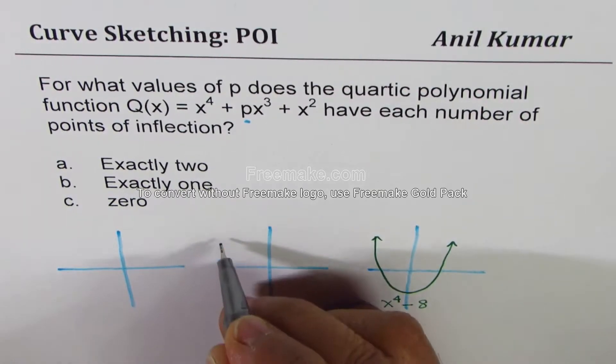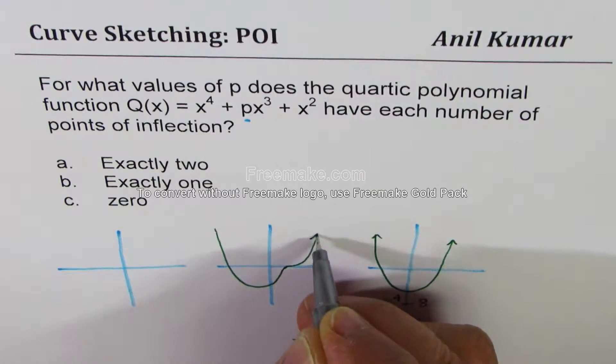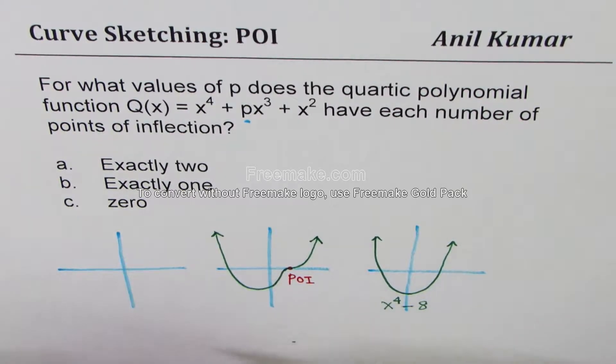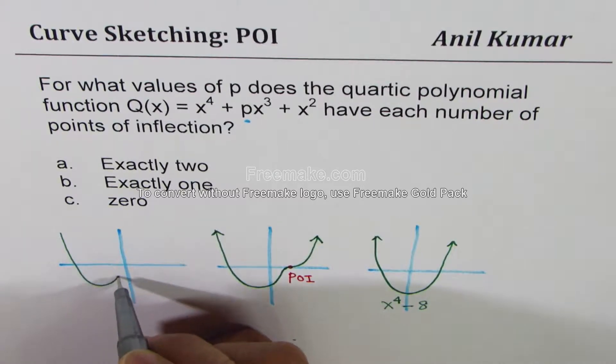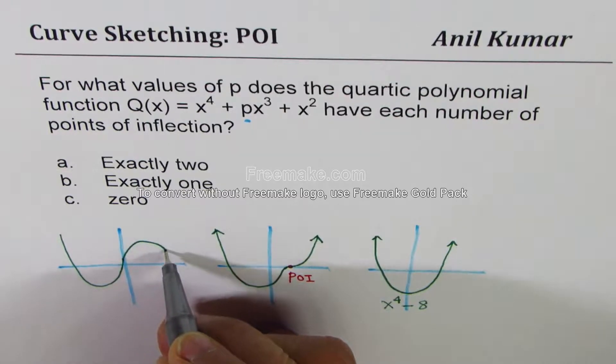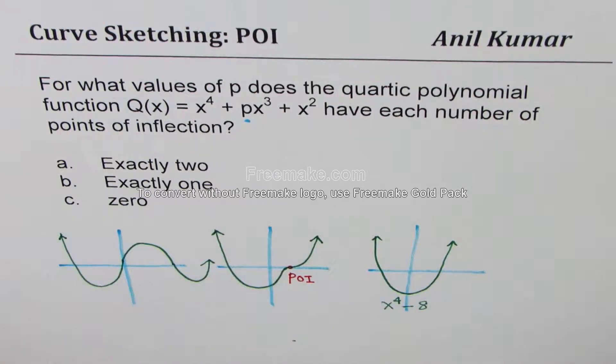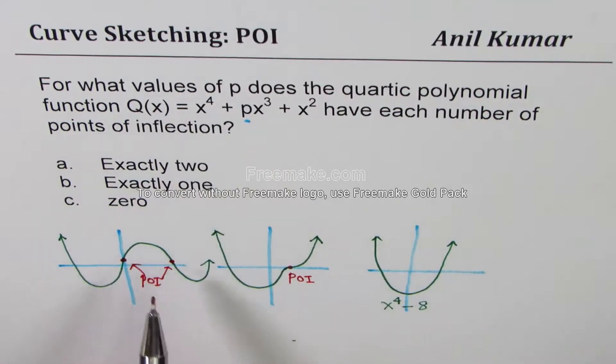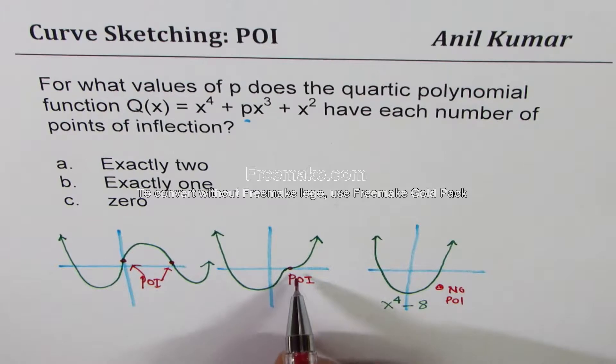Exactly one means you have concave up here, and then a cubic root here. So it goes like this. So this parabola has one point of inflection. Now you could also have a parabola which could have two points of inflection. So let's say this graph is concave up up to this point, and then it changes the concavity, and then again changes the concavity. So what you notice here is that we have two points of inflection.